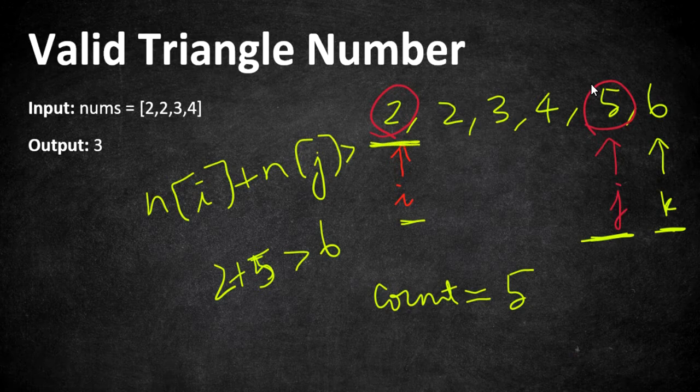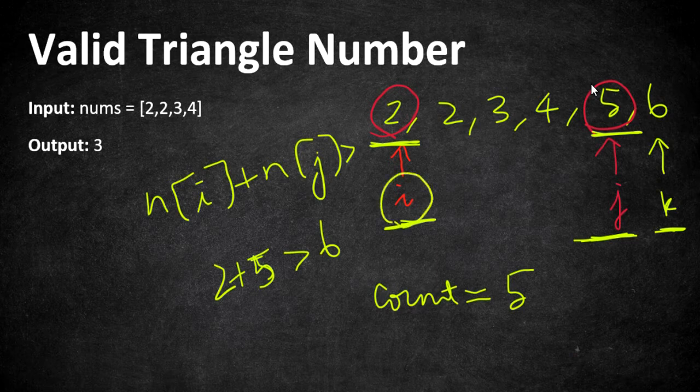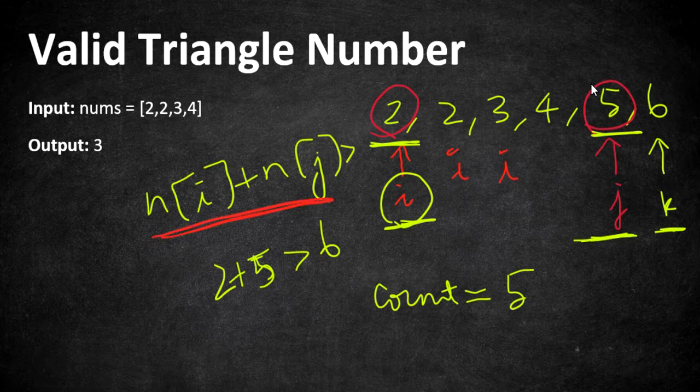If we can add the value at i and value at j and that is greater than k, which means if we iterate i to the next positions, whatever i moves towards j, it is going to increase the sum and definitely not going to decrease the sum.